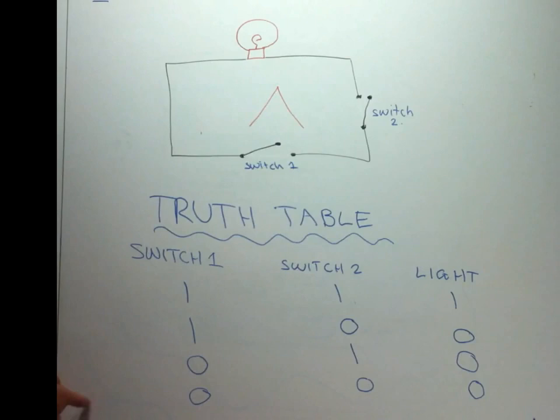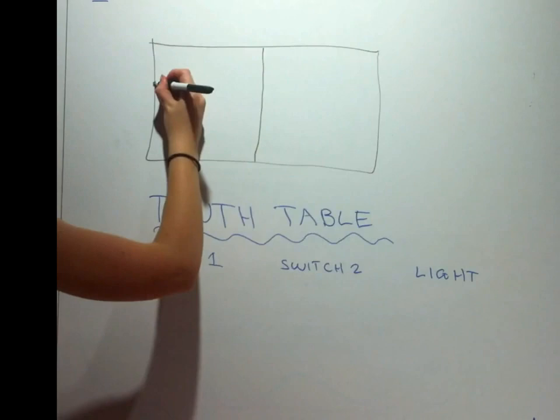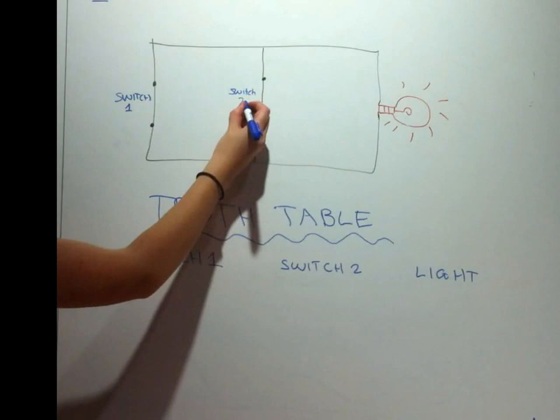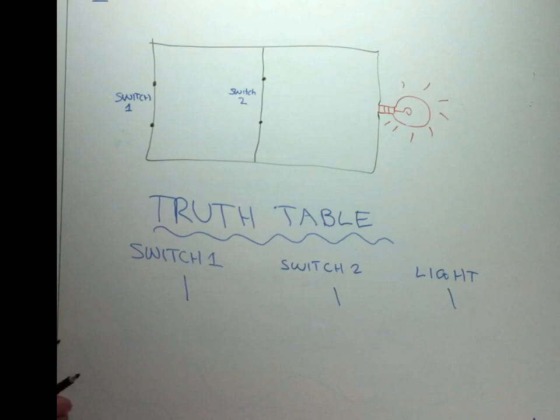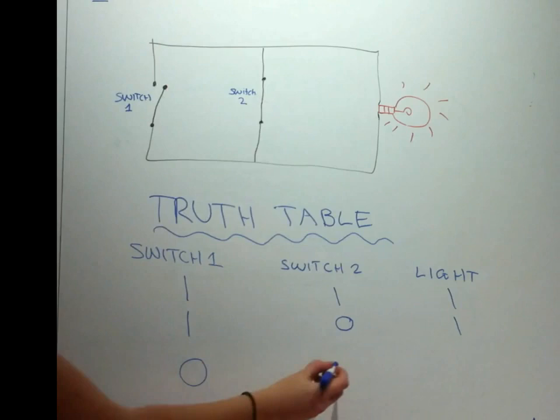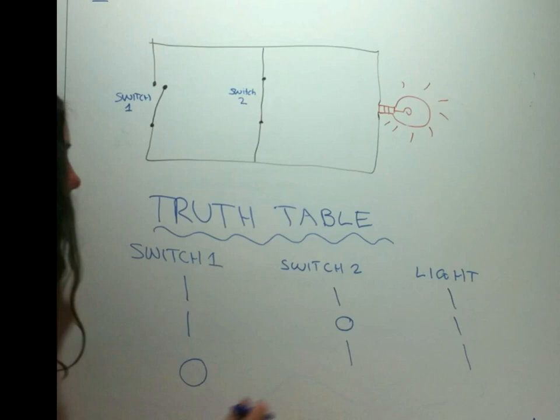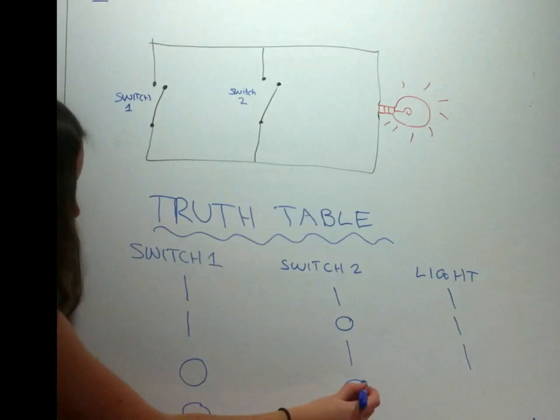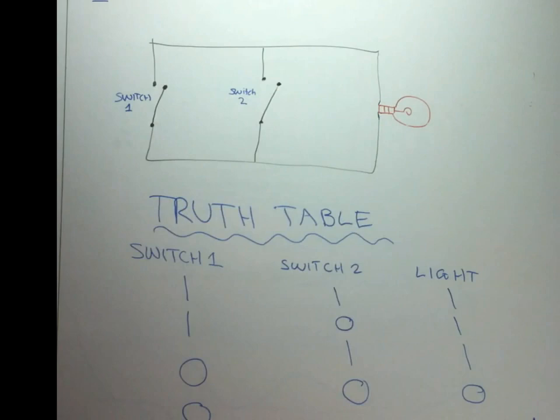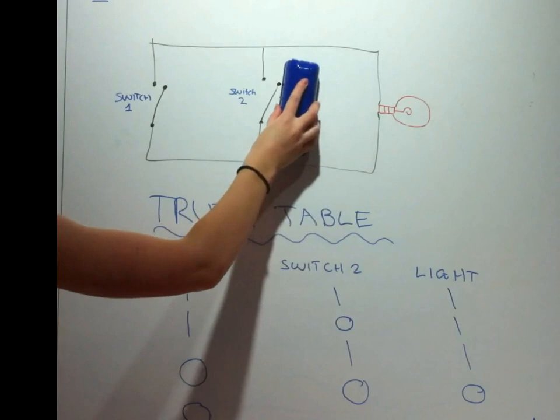Secondly, we can look at a complete parallel circuit. From the truth table we can see that if switch one is turned on and switch two is turned on, the lightbulb will be turned on. If switch one is turned on and switch two is turned off, then the lightbulb will still be turned on. If we turn off switch one and turn on switch two, then the lightbulb will still be turned on. The only situation where the lightbulb is turned off is when we have switch one turned off and switch two turned off. This is how the logical OR operation behaves. It can be drawn as such.